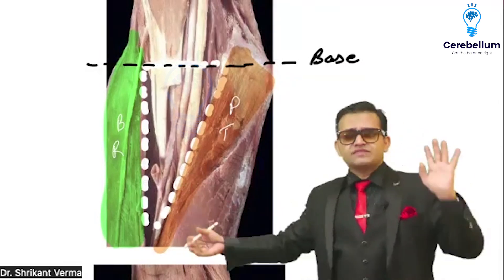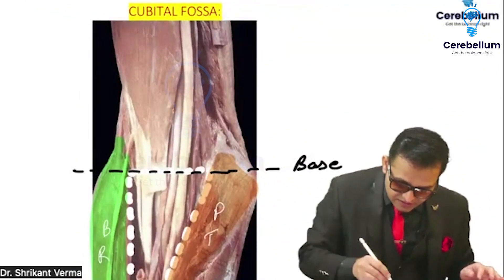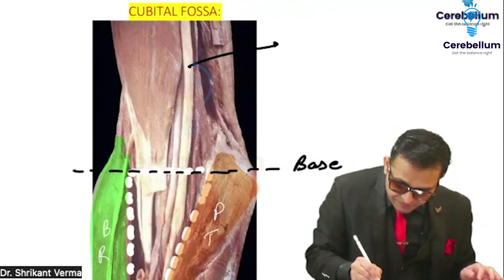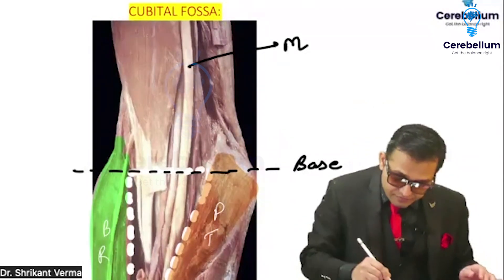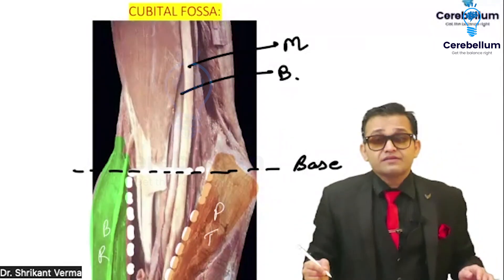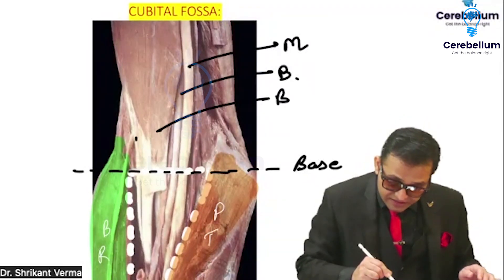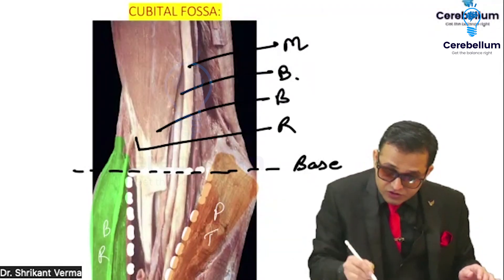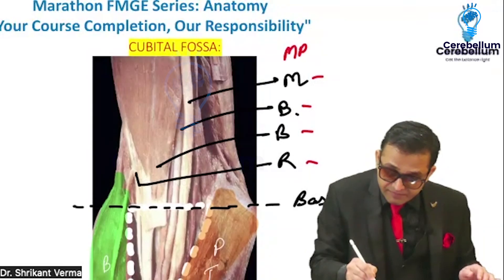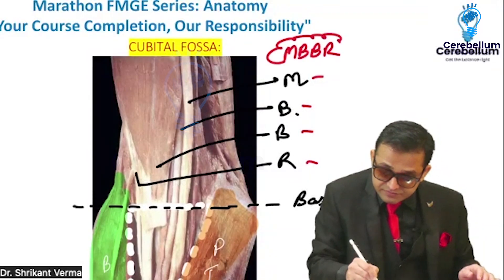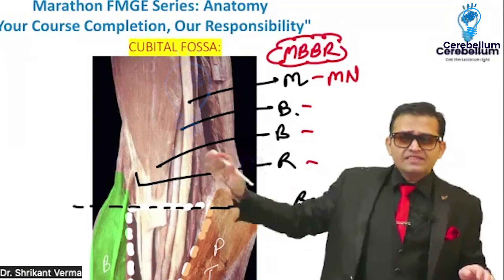The contents of the cubital fossa: here is the median nerve, then the brachial artery, then the tendon of biceps, and here is the radial nerve. So MBBR is your mnemonic — don't forget it.